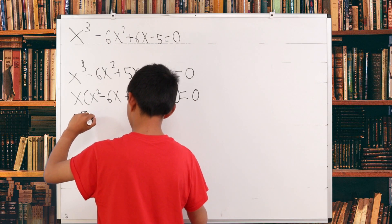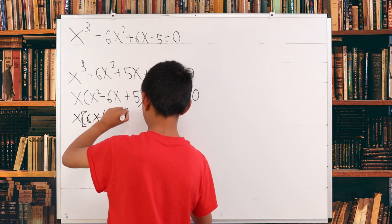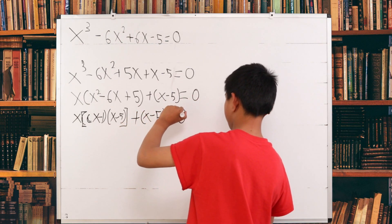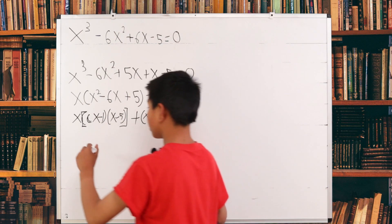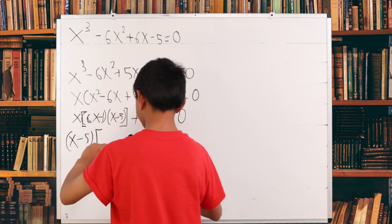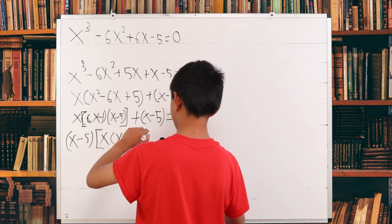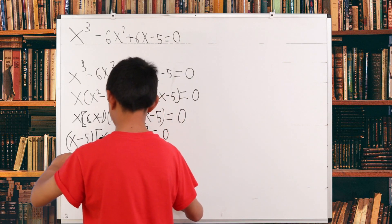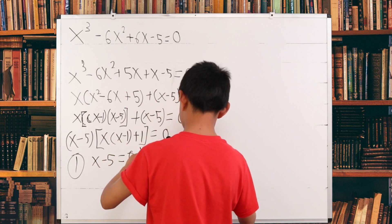We see that x squared minus 6x plus 5 factors as x minus 1 times x minus 5, so we have x times x minus 1 times x minus 5, plus x minus 5 equals 0. We can now factor out x minus 5, giving x minus 5 times x times x minus 1 plus 1 equals 0. Our first case: x minus 5 equals 0, so x equals 5.